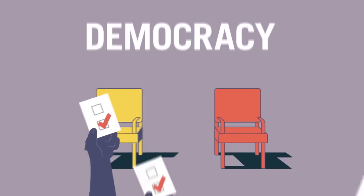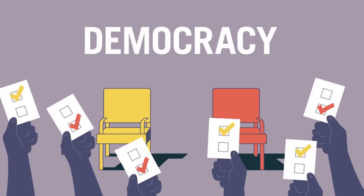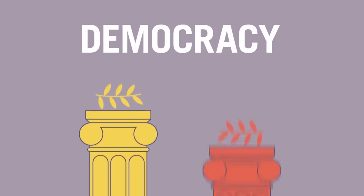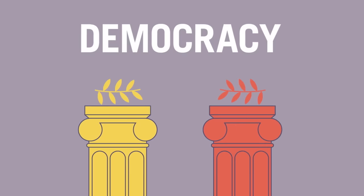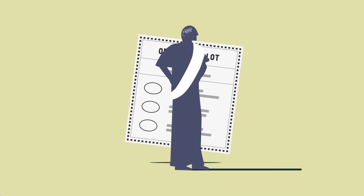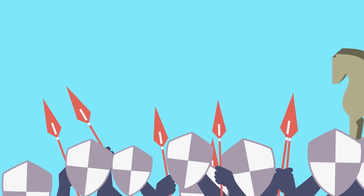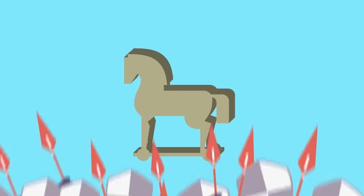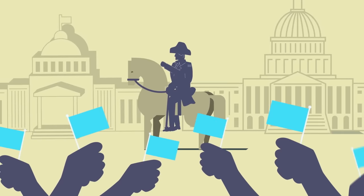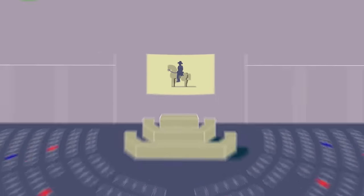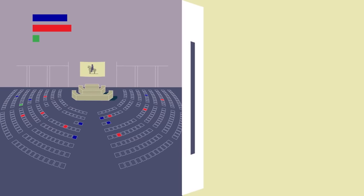One system is democracy, where the people choose who will govern them. One of its earliest forms, dating back to ancient Greece, was direct democracy, meaning one person could cast one vote on a matter, like whether to go to war. Votes were decided by a simple majority.